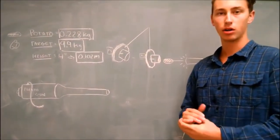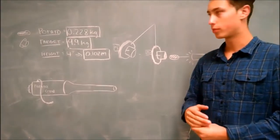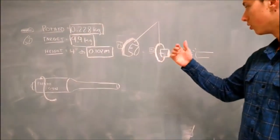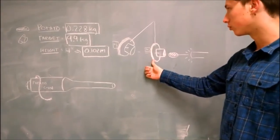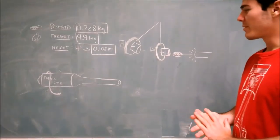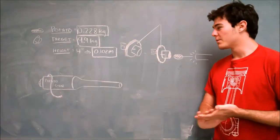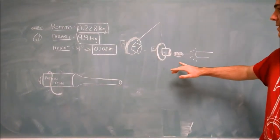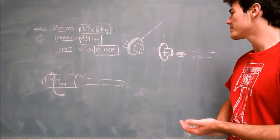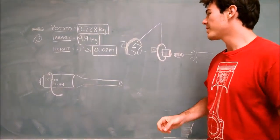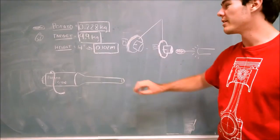So our experiment modeled that similar to a ballistics pendulum, where we used a ballistics and we had to measure the potato's initial mass as well as the initial mass of the object we were firing at. These are some of the measurements that we got from our project. We ended up measuring the potato out to be 0.228 kilograms. We measured our target, figured out that it was 9.9 kilograms.